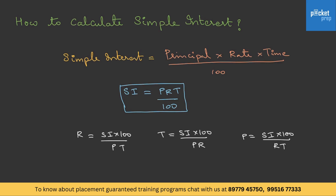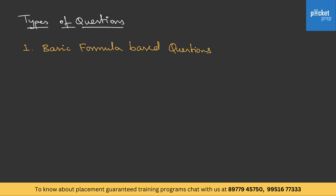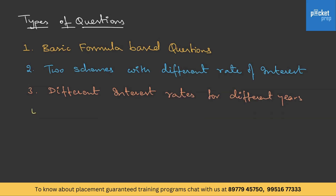Now let's look at the different types of questions asked from this topic. The first type is direct formula-based questions. The second type involves two schemes with different rates of interest — scheme A and scheme B with different interest rates. The third type is different interest rates for different years. The last type is miscellaneous or mix-bag questions.